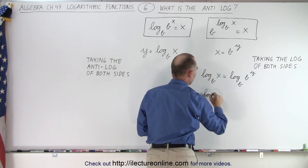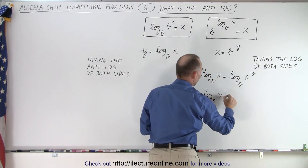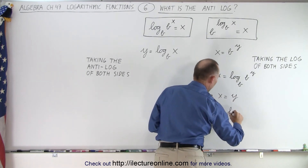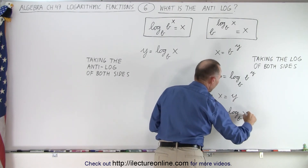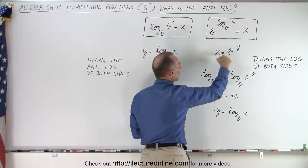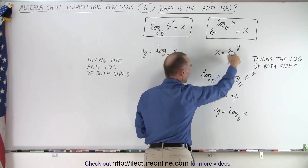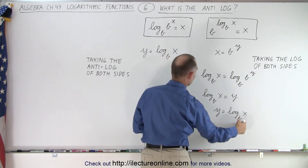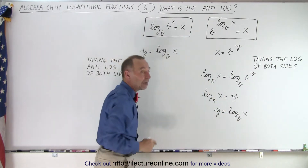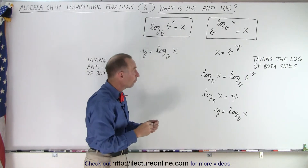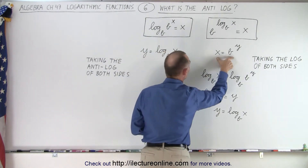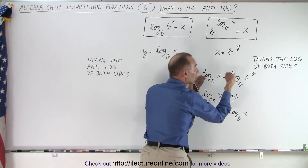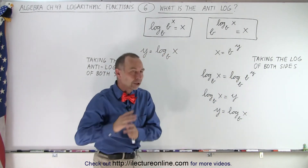So this becomes: log base b of x equals y, or y equals log base b of x. Notice, if we take the log of both sides of x equals b to the y, we get y equals the log base b of x — which is exactly the logarithmic form. So to convert from exponential form to logarithmic form, all we have to do is take the log of both sides.